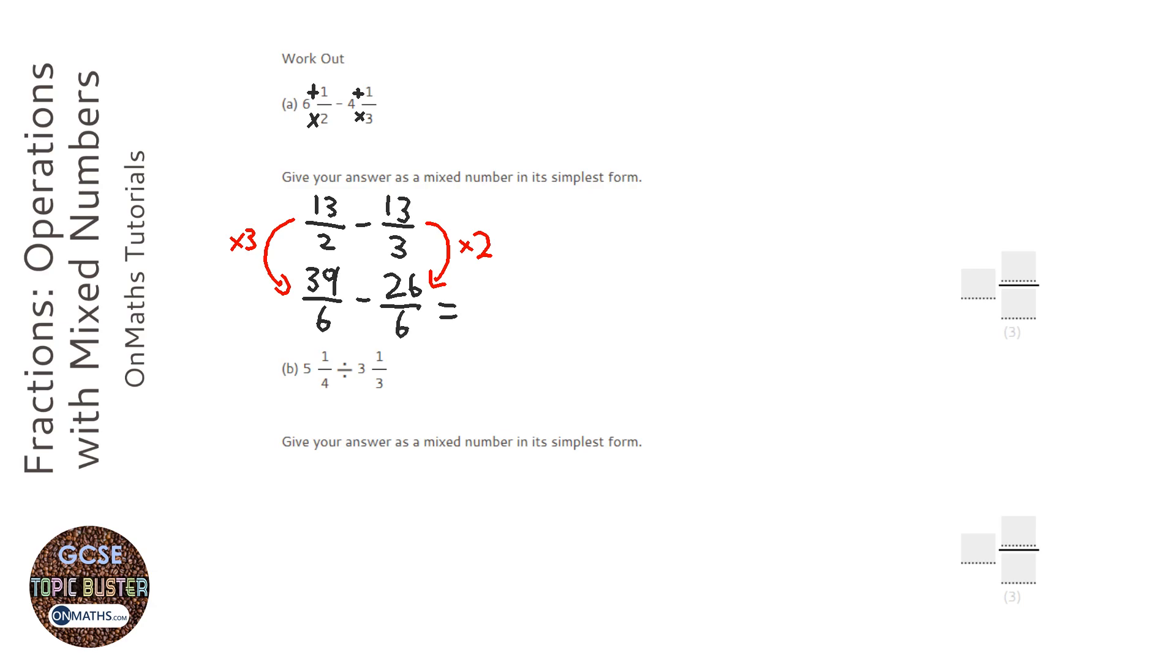Now we just simply subtract the tops, which is going to be thirteen, and then put it over the same denominators we've had in the two fractions there. So it's going to be over six.